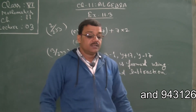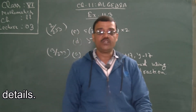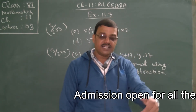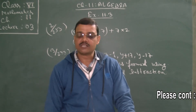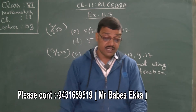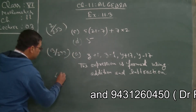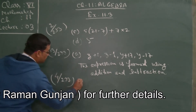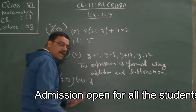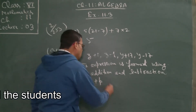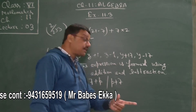Come to question 4: give expressions for the following cases. In the very first class of chapter 11 I had explained what is an algebraic expression, and in this chapter we are learning how to write expressions for given situations. For option A: '7 added to p' — so we write 7 plus p or p plus 7, both are correct.